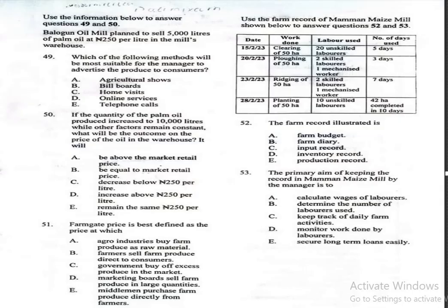Question 49: Balogun Oil Mill planned to sell 5,000 litres of palm oil at 250 naira per litre in the mill's warehouse. Which of the following methods will be most suitable for the manager to advertise the produce to consumers? A, agricultural shows; B, billboards; C, home visits; D, online services; E, telephone calls. The correct answer is online services, which is option D.